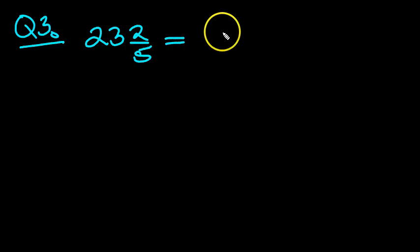23 and 2 fifths, what does that equal as an improper fraction for question 3? Well, 23 and 2 fifths can be written as 23 plus 2 fifths.